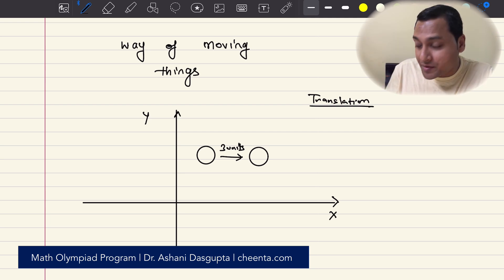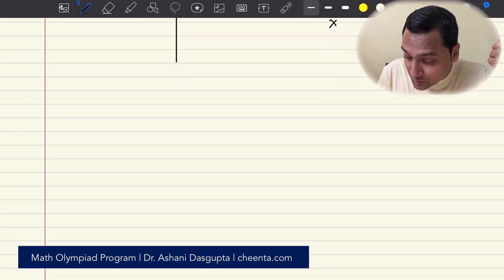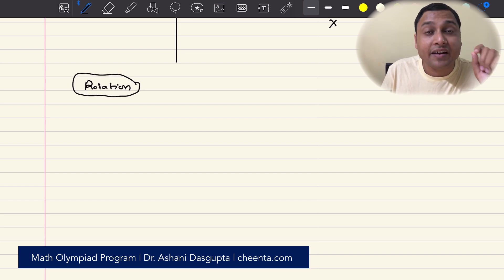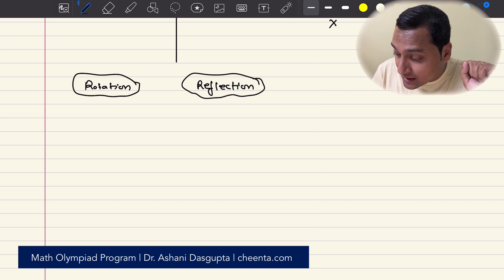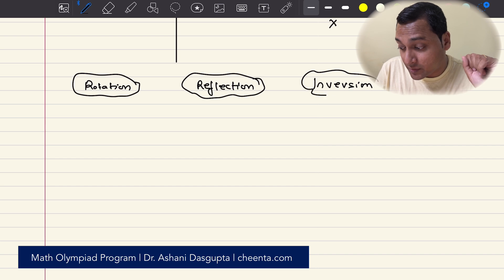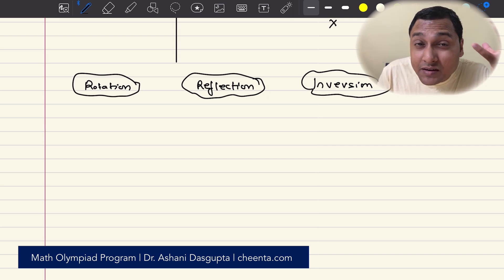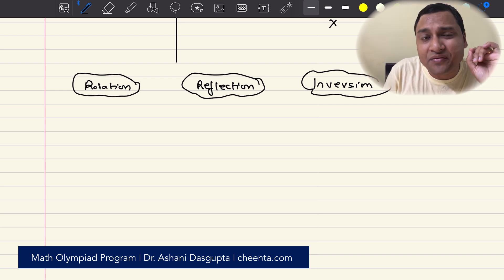We will talk about the different types of geometric transformations. The other examples of geometric transformation could be rotation. Rotation is a very important geometric transformation. There is reflection. And we also have inversion. Inversion is a very important geometric transformation. Many interesting problems can be solved using inversion. There are other types of geometric transformations. But let's now define what it precisely means when I say geometric transformation.